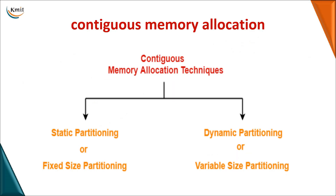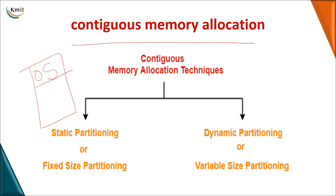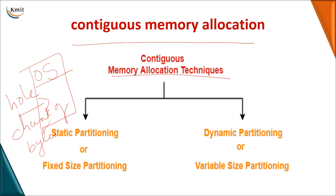Moving on to contiguous memory allocation: memory is viewed as a block, where the lower part holds the operating system and the remaining space — called a hole or chunk — is available for user processes. We'll now see various memory allocation techniques. The first is static or fixed-size allocation, and the second is dynamic or variable-size allocation.